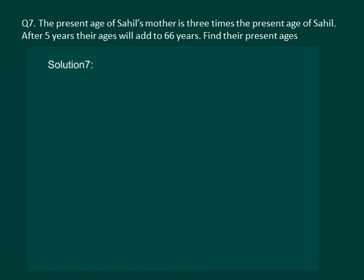Let us read the question. The present age of Sahil's mother is 3 times the present age of Sahil. After 5 years, their ages will add to 66 years. Find their present ages.